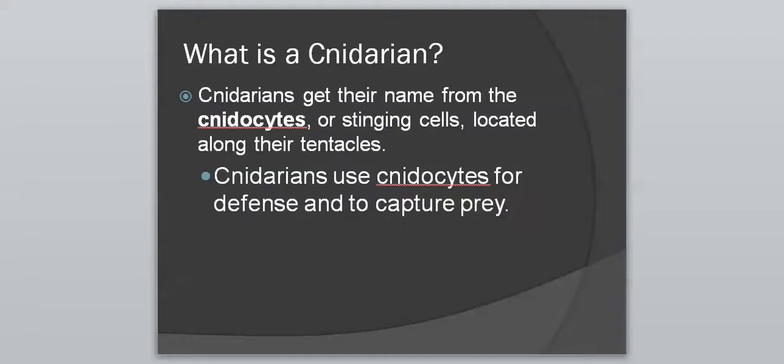They get their name from the cnidocytes, or the stinging cells that are located along their tentacles. The whole reason why this group has their name is because they are named after those stinging cells. They use the cnidocytes for defense and to capture prey — they can use these stingers to defend themselves and to actually grab a meal as well.